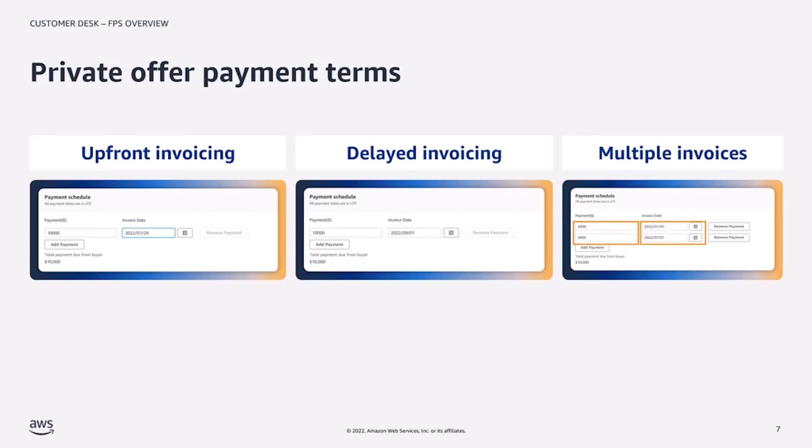If the buyer needs to be invoiced in installments, the seller can enter multiple payment line items by clicking "add payment" and entering the dollar amount and the invoice date for each payment.